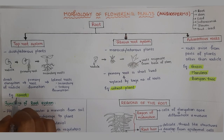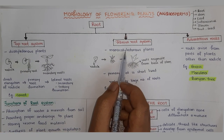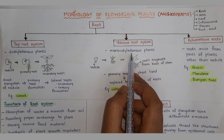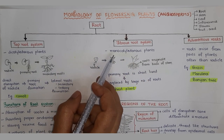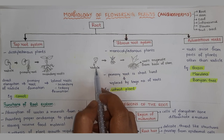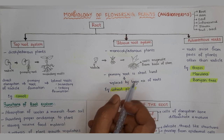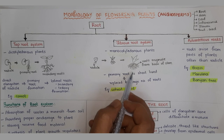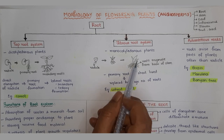An example of the tap root system is carrot. Coming to the fibrous root system, it is majorly seen in monocotyledon plants — flowering plants which have only a single cotyledon in their seed. In the fibrous root system, the root is also formed from the radicle, but the primary root formed is short-lived and is replaced by a large number of roots. The primary root is absent, and roots originate from the base of the stem.